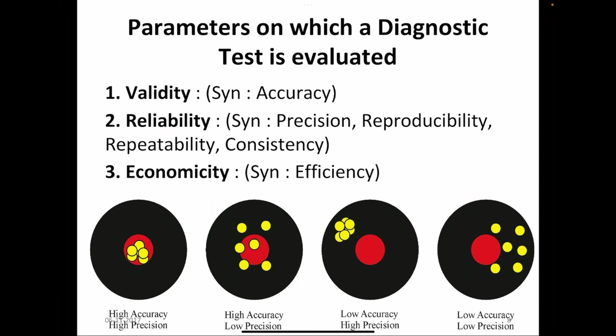The parameters on which a diagnostic test is evaluated are: validity or accuracy; reliability, otherwise called precision, reproducibility, repeatability, or consistency; and the third is economicity or efficiency. The images with dots show the difference between validity and reliability — accuracy and precision. One is highly accurate and precise, one is highly accurate but low precision, one is highly precise but low accuracy, and one has low accuracy and low precision.